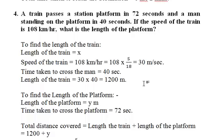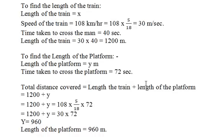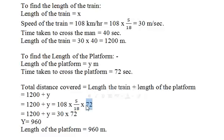The length of the train is 1200 meters. To find the length of the platform, we assume it to be y. The time taken to cross the platform is 72 seconds, and the total distance covered is the length of the train plus the length of the platform. So: 1200 + y = 30 × 72. Solving: 30 × 72 = 2160, and 2160 − 1200 = 960. Therefore y equals 960 meters, which is the length of the platform.